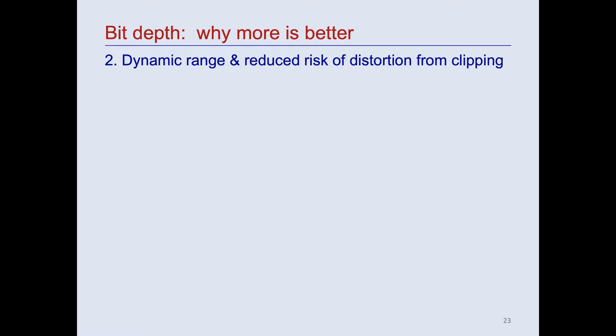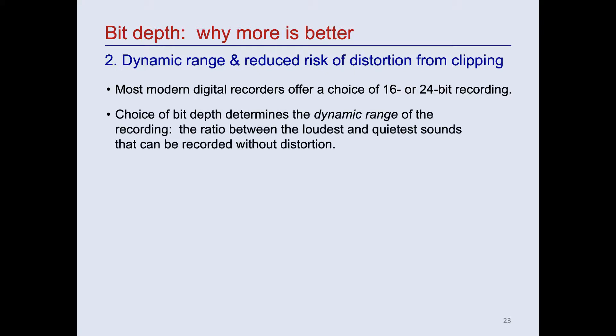The second reason to prefer higher bit depths is related to a recording's dynamic range and reducing the risk of a type of distortion called amplitude clipping. Most modern digital recorders, as we said, offer a choice of 16 or 24-bit recording. Which bit depth you use determines the dynamic range of the recording. Dynamic range is the ratio between the loudest and quietest sounds that can be recorded without distortion. Dynamic range is expressed in decibels. The general rule is that the dynamic range in decibels is six times the number of bits used for each sample. So, a 16-bit recording has a dynamic range of 96 decibels, and a 24-bit recording has a dynamic range of 144 decibels.